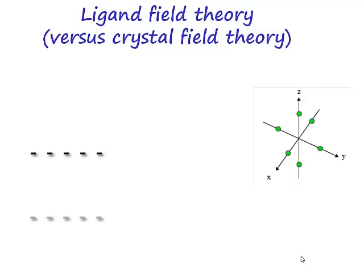You're used to the idea that transition metal complexes have certain geometries. Typically the geometry that we're used to encountering in transition metal chemistry is an octahedral geometry. So let's consider an octahedral geometry of ligands around a transition metal centre.